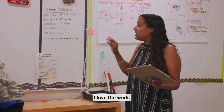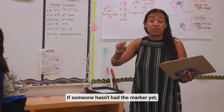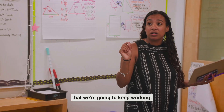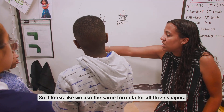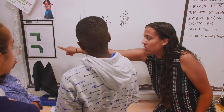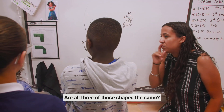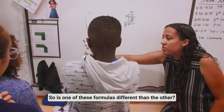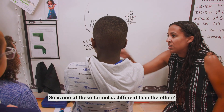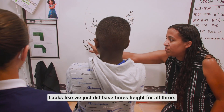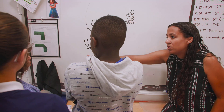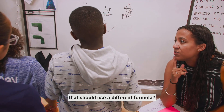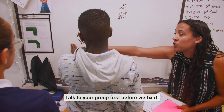I love the work, keep going. Make sure that we're sharing the marker — if someone hasn't had the marker yet, maybe pass it on. We've got about six more minutes. I have a question here — it looks like we used the same formula for all three shapes. Are all three of those shapes the same? Is one of these formulas different than the other? It looks like we just did base times height for all three. Is there one of those shapes that should use a different formula?